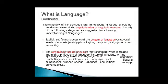The simplicity of these statements about language should not mask the sophistication of linguistic research. A study of the following categories is suggested for understanding language: explicit and formal accounts of the system of language on several levels of analysis — mainly phonological, morphological, syntactic, and semantic; the symbolic nature of language; relationship between language and reality; philosophy of language; history of language; writing systems; language and cognition; psycholinguistics; sociolinguistics; language and culture; bilingualism; first and second language acquisition; and language universals.